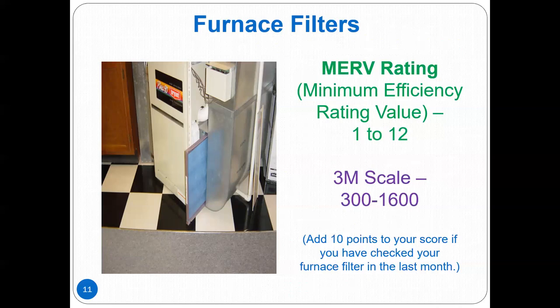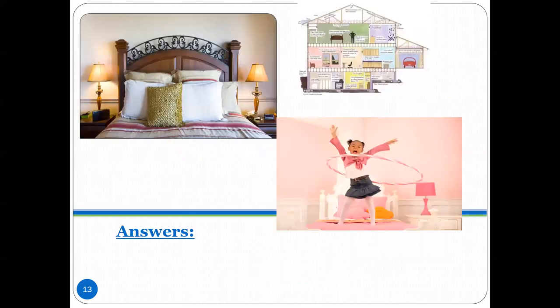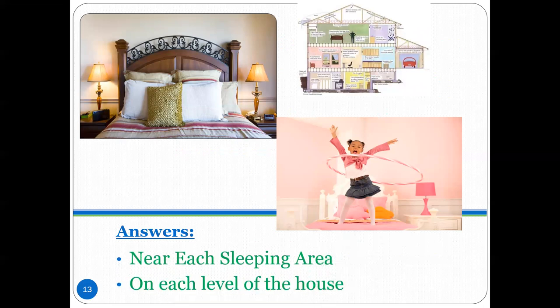Give yourself 10 points if you checked and changed your furnace filter within the last month. Carbon monoxide, also known as the silent killer, is removed by ventilation. Carbon monoxide poisoning causes fatigue, headaches, dizziness, and death. If you suspect carbon monoxide poisoning, leave your house immediately and call 9-1-1. Place your carbon monoxide detector near each sleeping area and on each level of the house. Change the battery at least once per year and replace the detector every five to seven years.